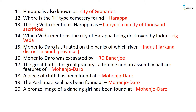Which Veda mentions the city of Harappa being destroyed by Indra? It is the Rig Veda. Mohenjo-daro is situated on the banks of the Indus River in the Larkana district in Sindh province. Mohenjo-daro was excavated by R.D. Banerjee. The Great Bath, the Great Granary, a temple, and an assembly hall are all features of Mohenjo-daro.